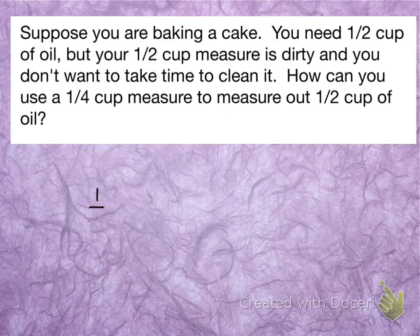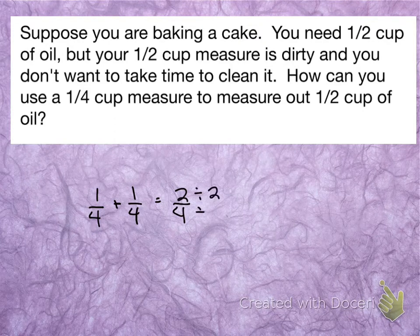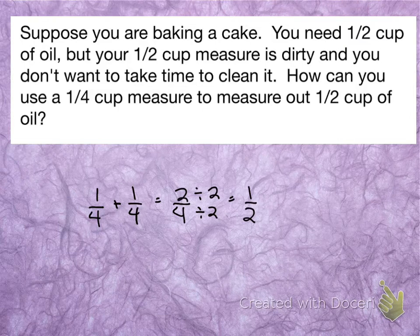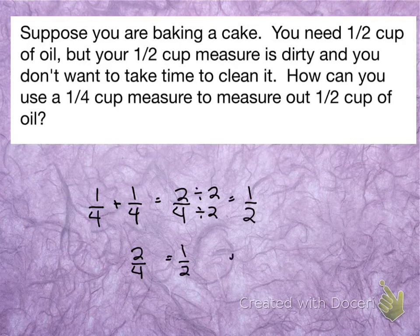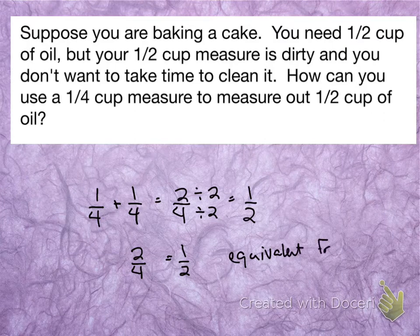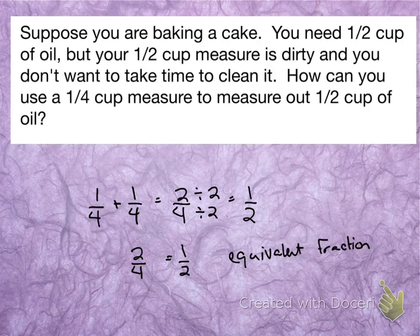What I can do is take a quarter cup and do it twice. So a quarter cup plus a quarter cup gives me two fourths. And if we reduce it, that becomes one half. So what we find is that two fourths and one half are equivalent fractions. If I put two quarter cups into my cake of oil or if I put one half a cup into my cake, either way, I have put in the same amount of oil.